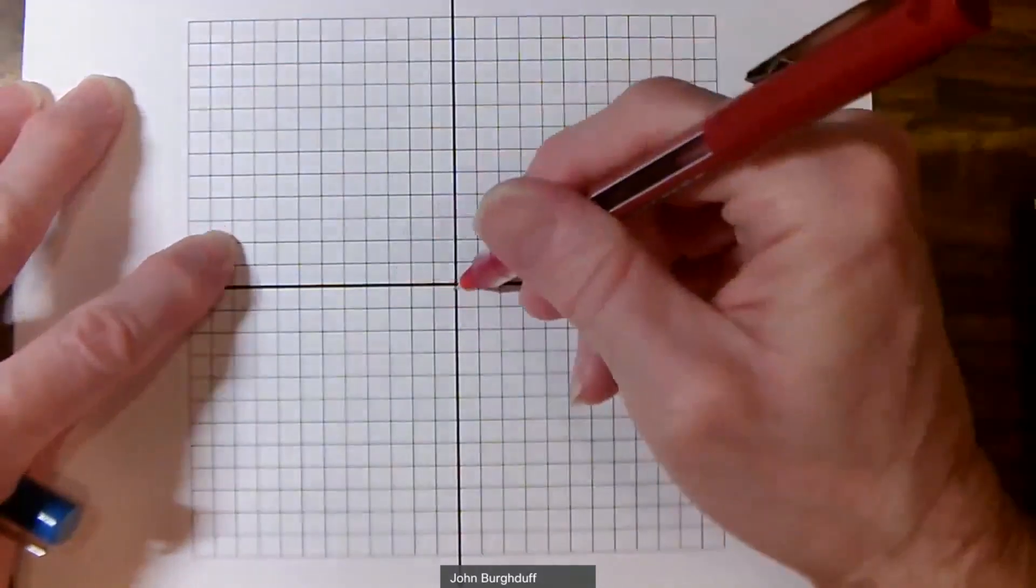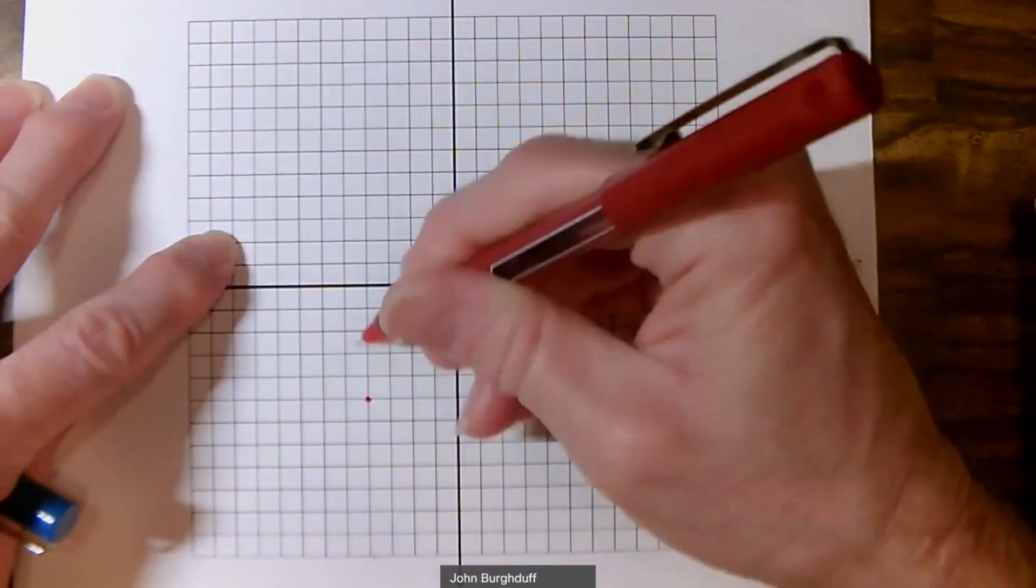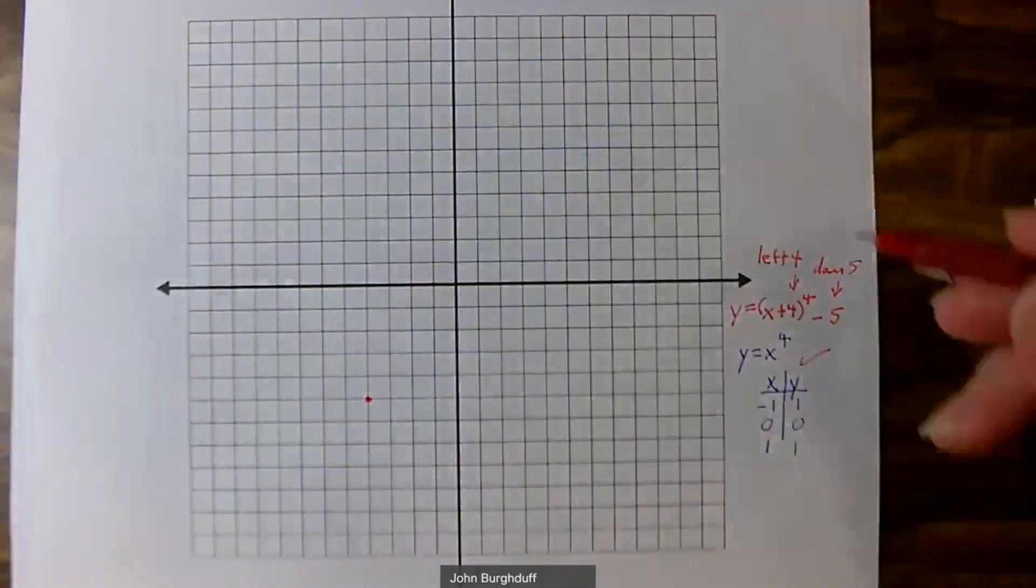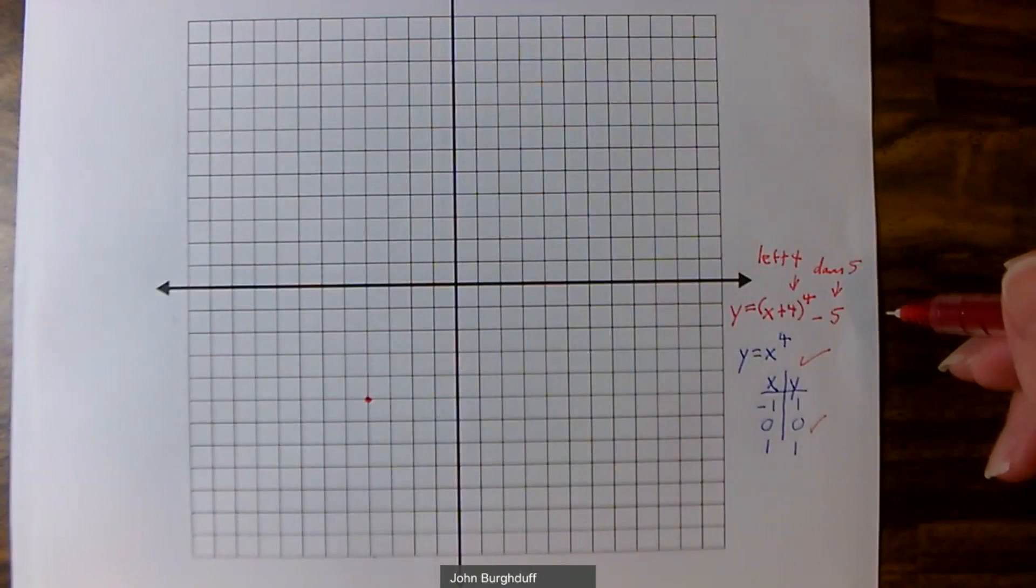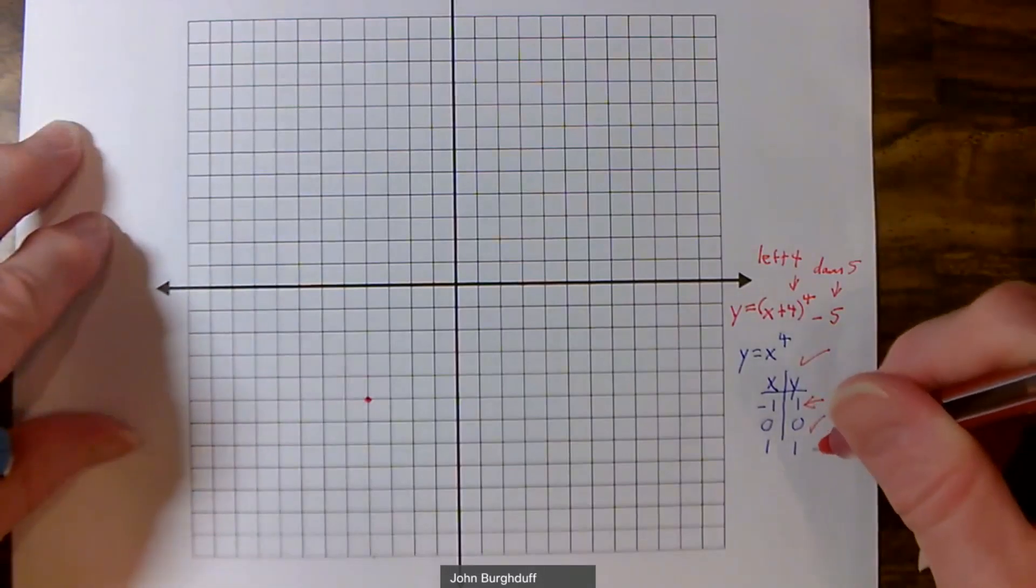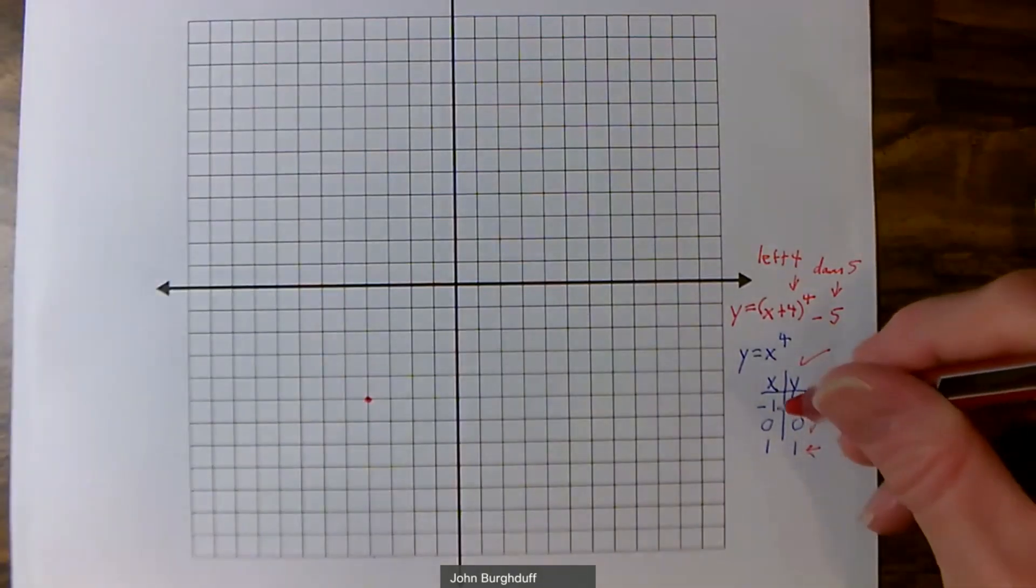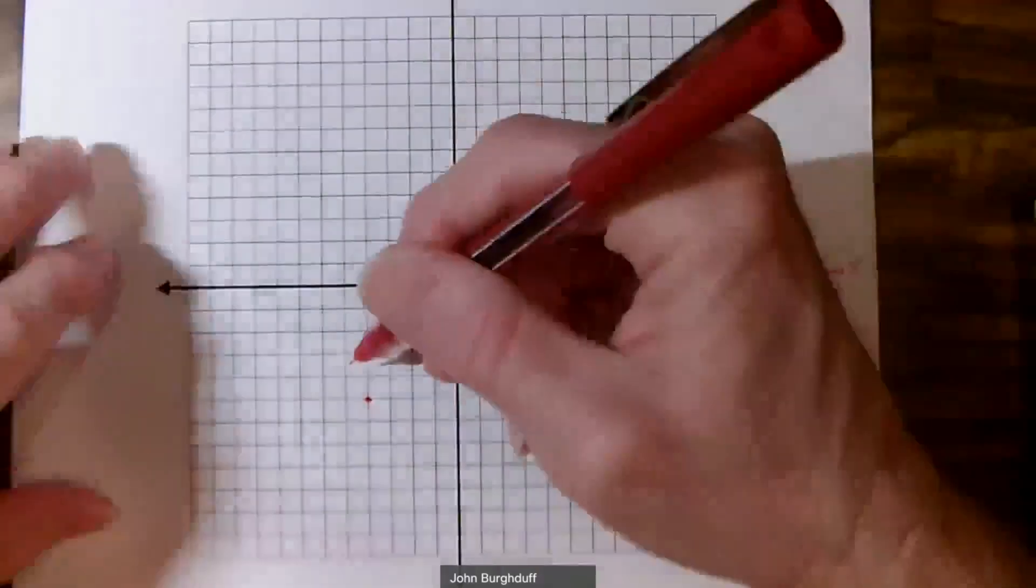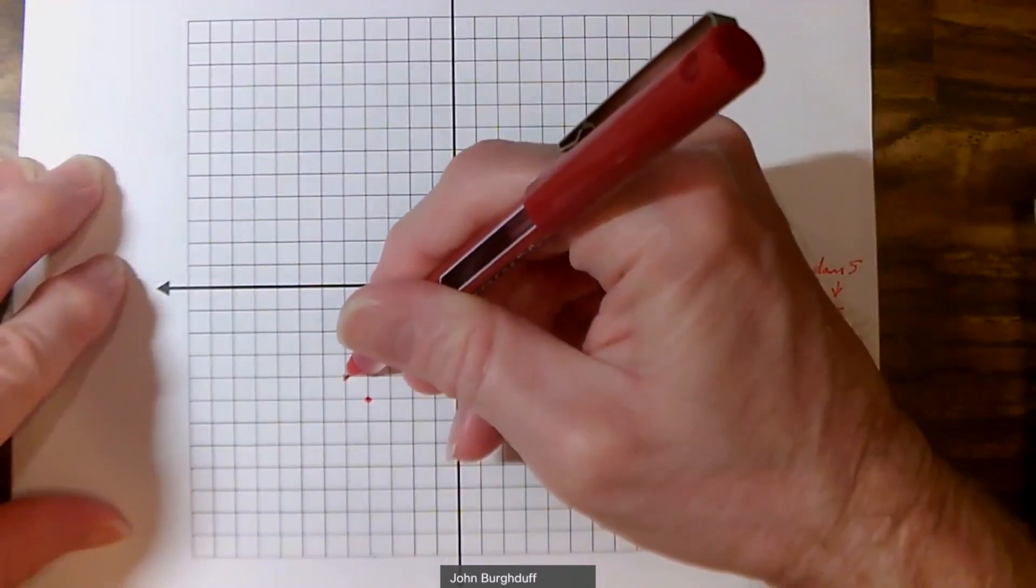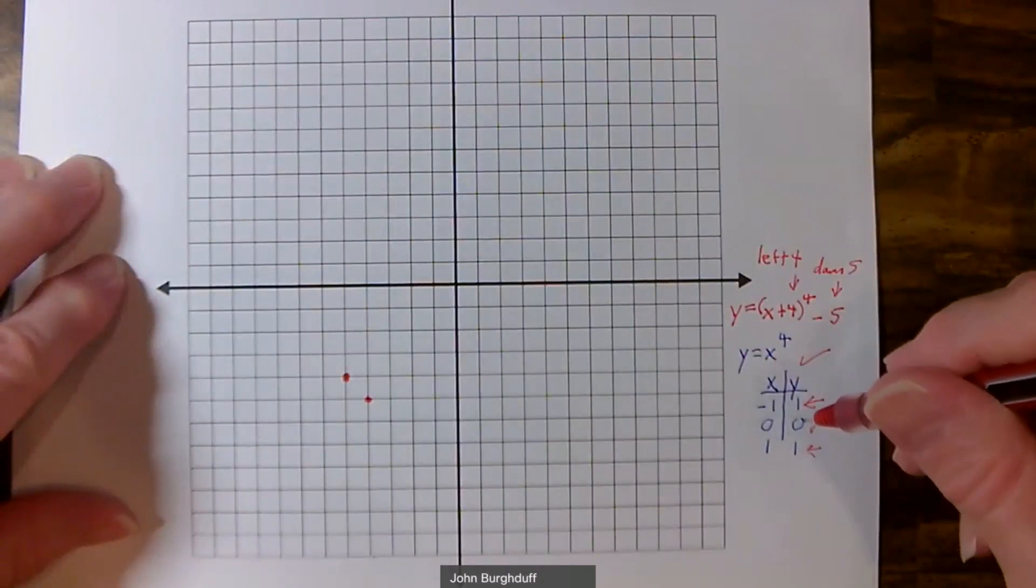So if I started my origin, and I imagine shifting 1, 2, 3, 4 left, 1, 2, 3, 4, 5 down, just making sure I count, the origin of y equal x to the fourth will shift here. Then I just recreate the shape from that new origin. And what I want to focus on in my table here is not so much these specific points, but how the graph moves as I move away from the origin. Think of this point as being 1 left and 1 up from the origin. With our new origin, we would again go 1 left and 1 up. And this point would be 1 right, 1 up compared to the origin. We do the same here.